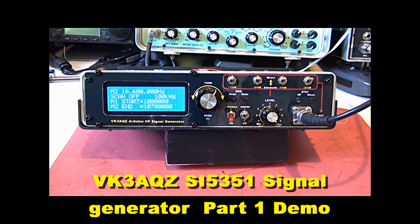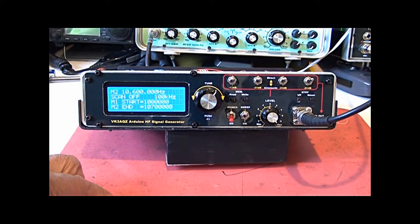This is a quick look at a signal generator I've been building using some bits left over from my HF transceiver project. It uses an SI5351 phase lock loop clock chip driven by an Arduino Mega.